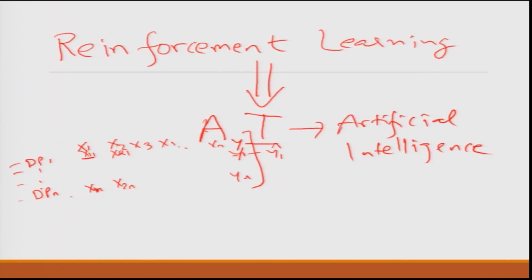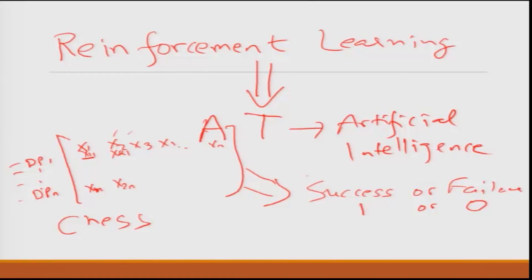In reinforcement learning you do not have these. Instead what you have is a final output of success or failure, 1 or 0. Just to give an example, one of the examples may be a game of chess. In game of chess each of these different axes could be different moves that you make, and after all the moves that you make as per the rules of the game you get a final success or a final failure, 1 or 0. The goal of reinforcement learning based algorithm is to optimize each of those moves, each of those unit axes that led you to the final outcome.